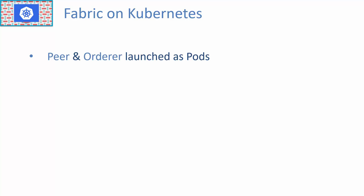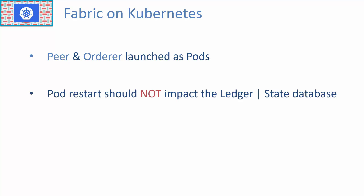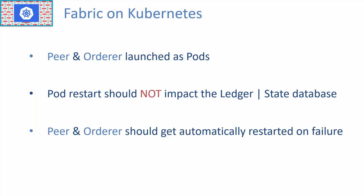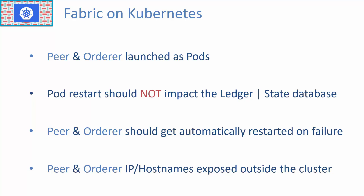Let's go over the fabric setup requirements on Kubernetes. The peer and the orderer are created as containers in Kubernetes pods. If the pod is restarted, it should not impact the ledger and the state data on the persistent store — the file system where the peer and orderer write data should not be lost on pod restart. In case of pod failure, the peer and orderer should automatically restart in a new pod, and their IP addresses should be exposed outside the cluster so they can participate in the gossip network.